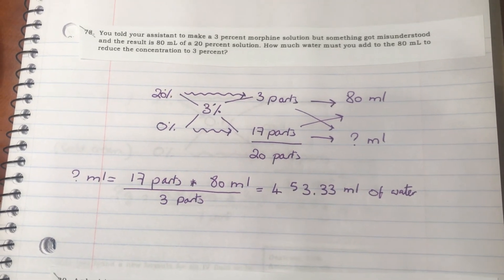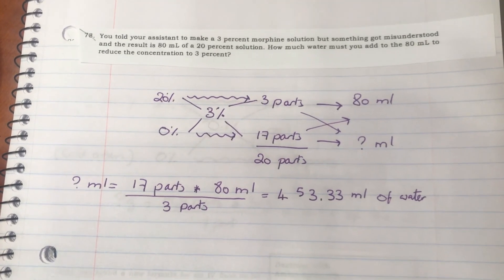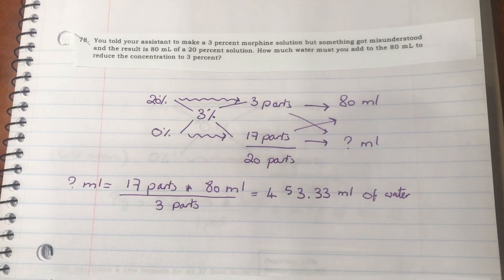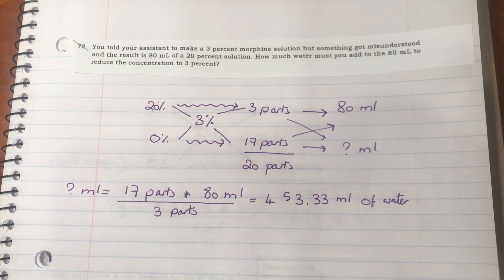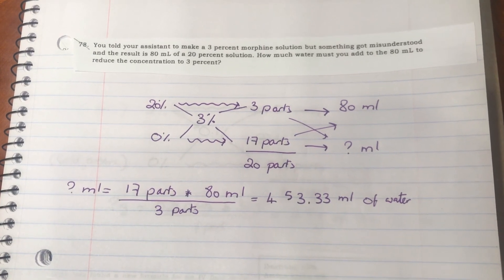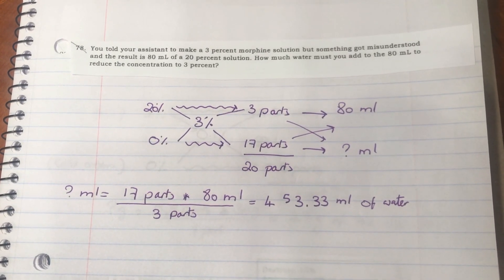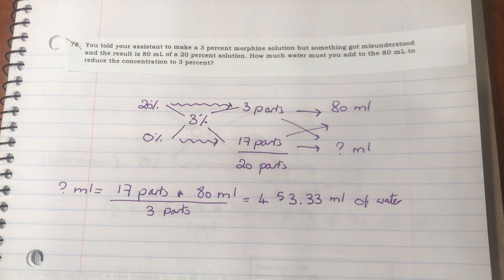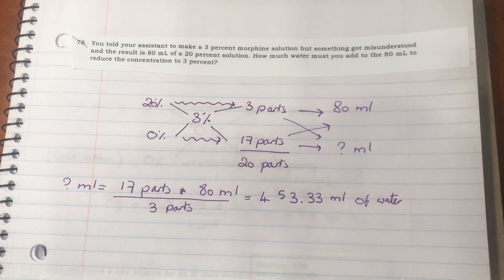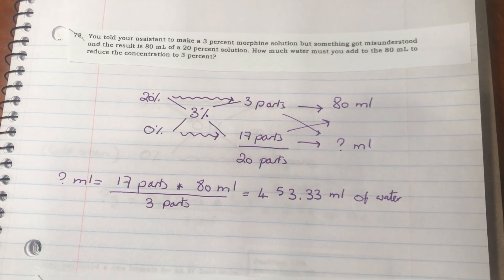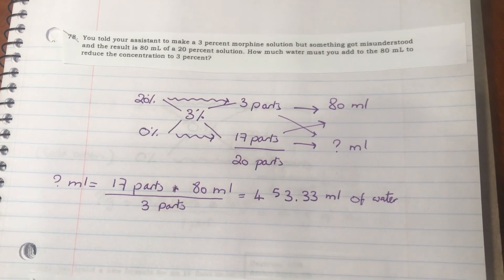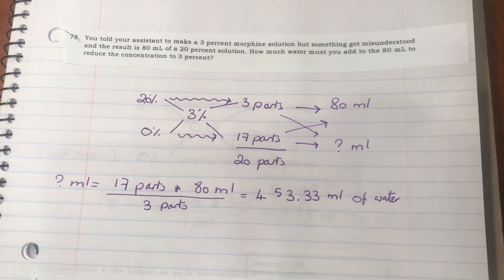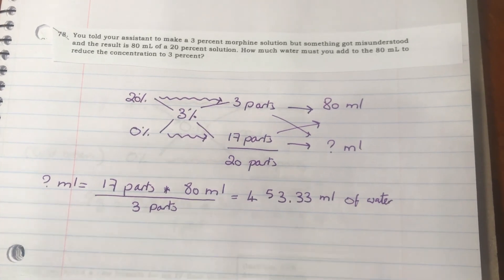That was the second example of allegation. Next we'll be moving to the third and more complicated idea for allegation, which will be the last example we'll be explaining.